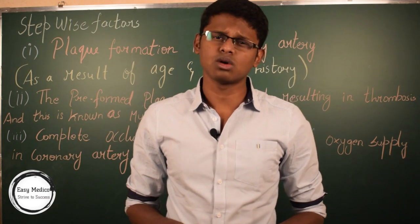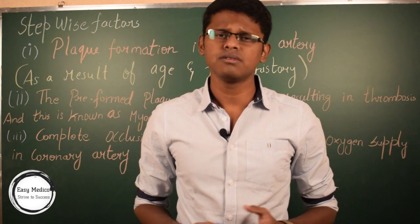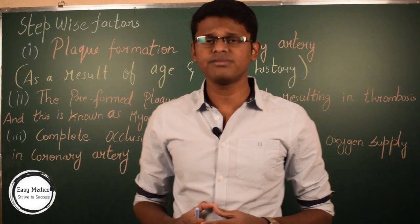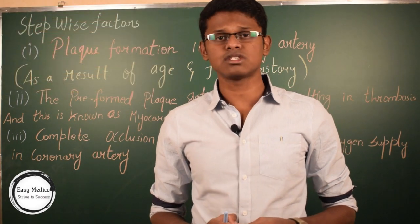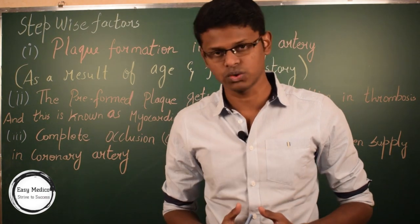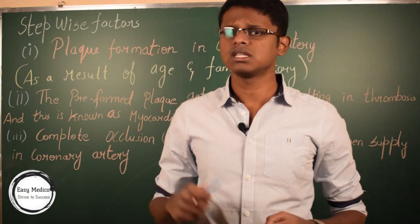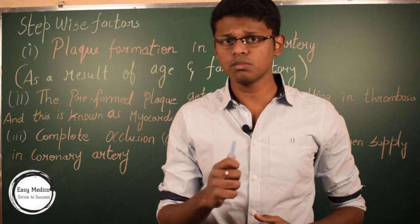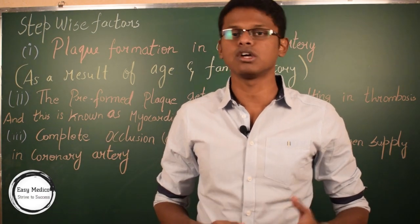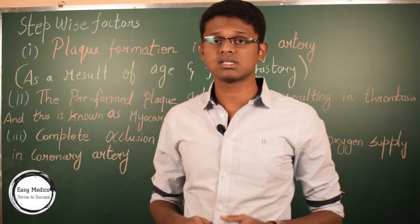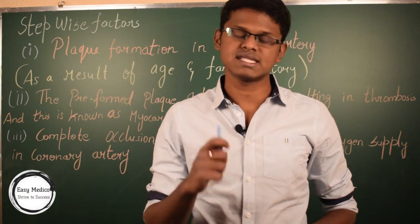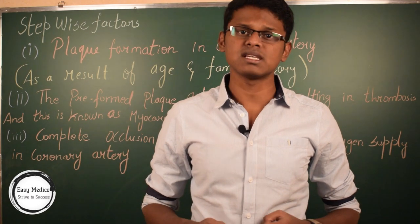In order to understand what causes acute coronary syndrome, let's discuss it stepwise. The coronary artery's main function is to supply oxygen through blood. First, plaque formation occurs in the coronary artery, which leads to blockage or occlusion of blood in that particular artery. This occurs as a result of age, family history, and some other factors. In the second stage, this plaque formation gets ruptured and forms thrombosis, which is known as myocardial infarction. The third process causes complete occlusion or complete blockage of oxygen supply in the coronary artery, which is known as STEMI — ST-segment elevation myocardial infarction.